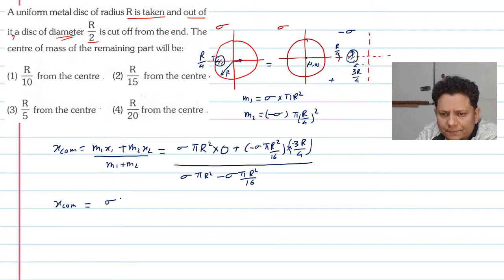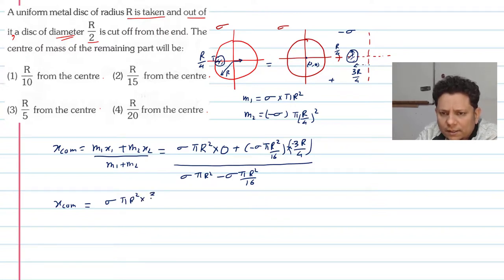This simplifies to sigma pi R squared multiplied by 3R divided by 16 times 4, giving the final result for the center of mass position.